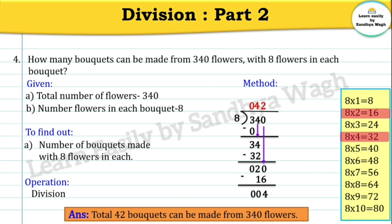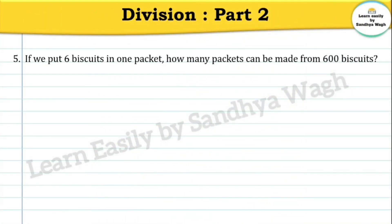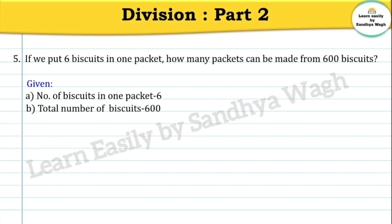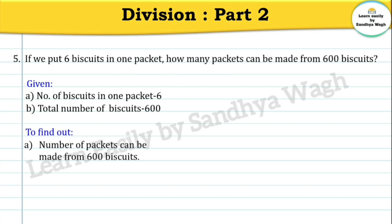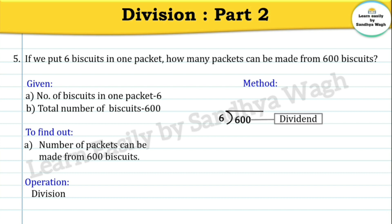Next word problem: If we put 6 biscuits in one packet, how many packets can be made from 600 biscuits? Given: number of biscuits in one packet is 6; total number of biscuits is 600. What do we have to find out? Number of packets that can be made from 600 biscuits. Operation: division. Let us divide 600 by 6.